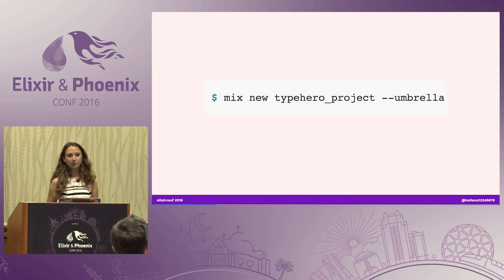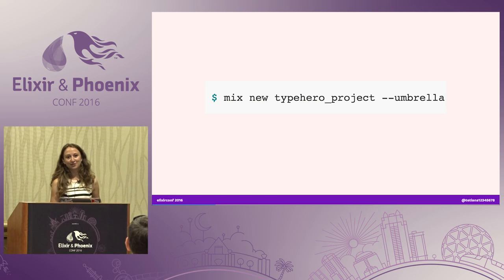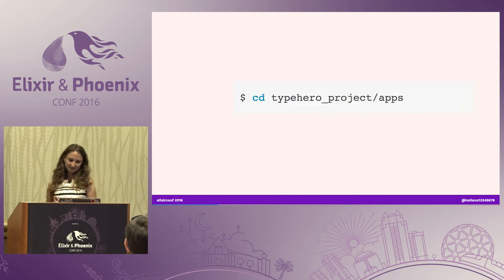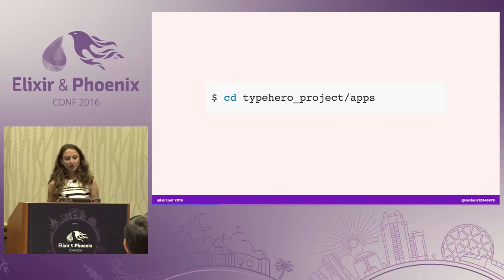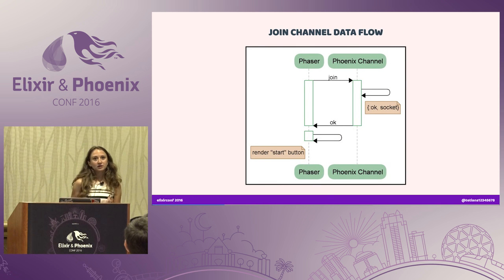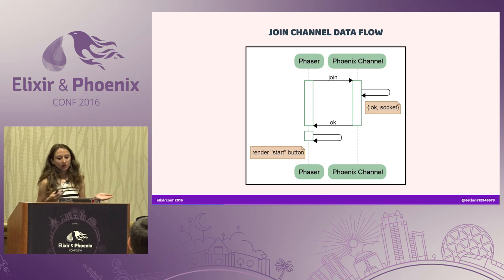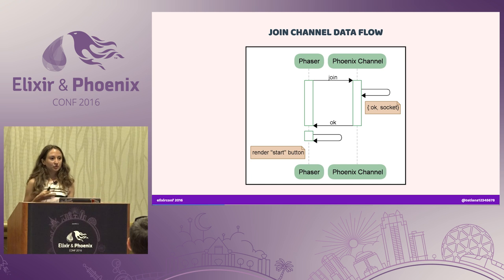First, we need to generate our umbrella project. Now with Chris's keynote, I know that it's easier to do it with a Phoenix umbrella application already in place, but I didn't know that, so I did it the long way. And then within our umbrella application structure, I could generate my first umbrella application, which is going to use Phoenix. The goal for this part is: whenever we load the browser, we have Phaser sending a join message to the Phoenix channel, and Phoenix channel returning OK, and then Phaser is going to render a start button to tell our user that it's ready.